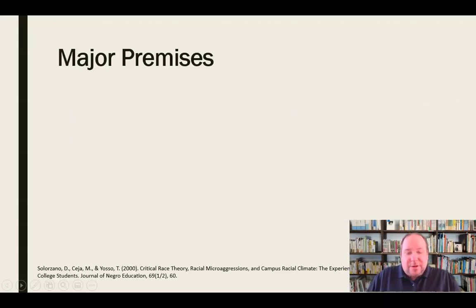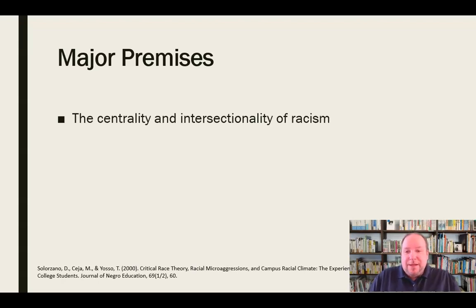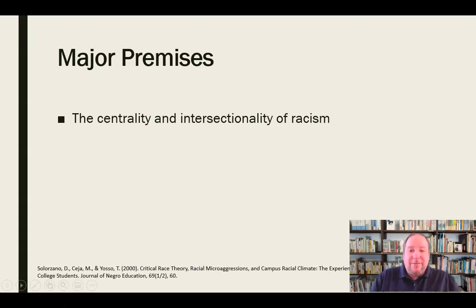The major premises of critical race theory include five basic tenets presented by Solorzano and Yasso in 2000. The first is the centrality and intersectionality of racism, which basically says that racism exists everywhere in American life — it is pervasive, from our internal thoughts and individual actions to the embedded systemic inclusion in our institutions, our systems, and our culture, ingrained since prior to the founding of the United States.